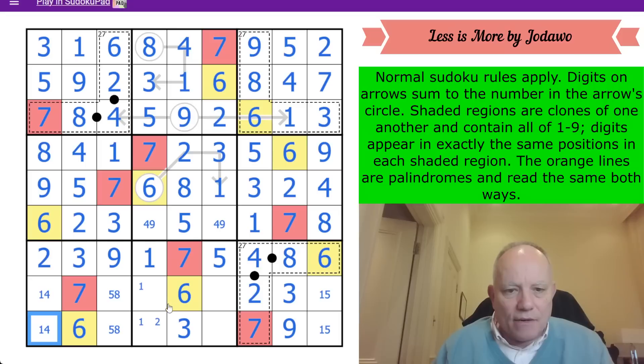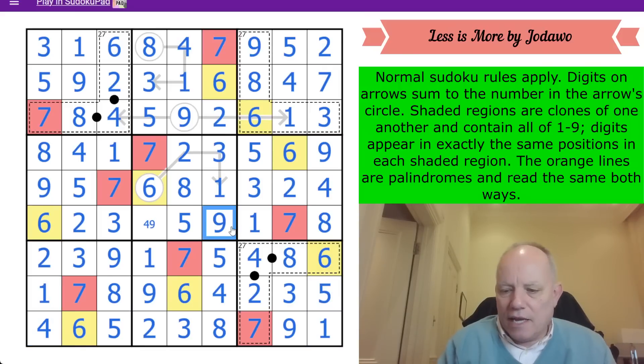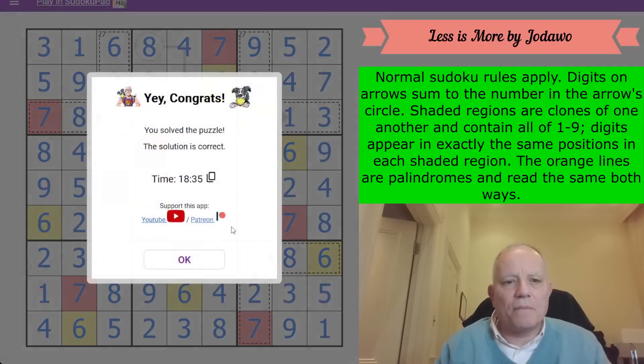Excellent. So, now we've got 2, 4, 8 and 9 to put in. This is the only place left for 2. 9 sees both of those. So, that's 9. 4 sees down to there. So, that's an 8. And we're finished, I think. 8, 5, 4, 1. 5, 1. 9 and 4. And that's a lovely puzzle.